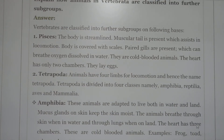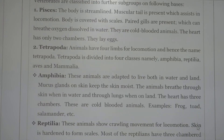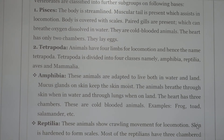Next is Tetrapoda — animals that use four limbs for locomotion. Tetrapoda is divided into four classes: Amphibia, Reptilia, Aves, and Mammalia. Under Amphibia: these animals are adapted to live both on land and in water. They keep the skin moist. The animals breathe through skin in water and through lungs on land. The heart has three chambers. They are cold-blooded. Examples are frog, toad, and salamander.